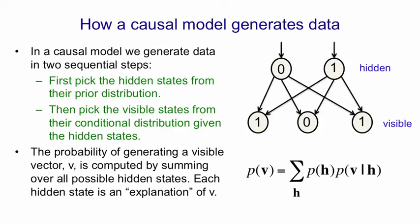Factor analysis, for example, is a causal model that uses continuous variables, and it's probably the most natural way to think about generating data. In fact, some people, when they say generative model, mean a causal model like this. But there's a completely different kind of model.